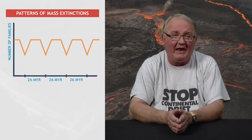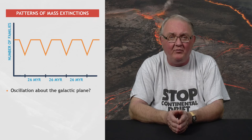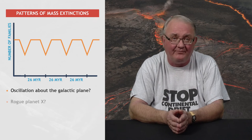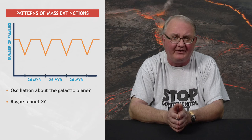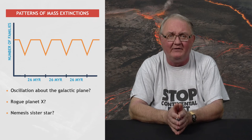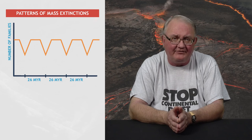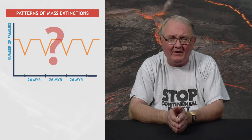Suggested driving mechanisms included oscillation about the galactic plane, a rogue planet, Planet X, or Nemesis — a postulated sister star to the Sun with a highly elliptical orbit. However, other analyses question the validity of this periodicity.